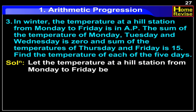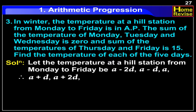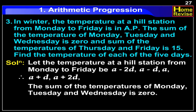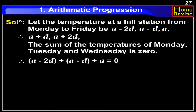Solution: Let the temperature at the hill station from Monday to Friday be A minus 2D, A minus D, A, A plus D, and A plus 2D. The sum of temperatures of Monday, Tuesday, and Wednesday is 0. Therefore, (A minus 2D) plus (A minus D) plus A is equal to 0. Therefore, 3A minus 3D is equal to 0.